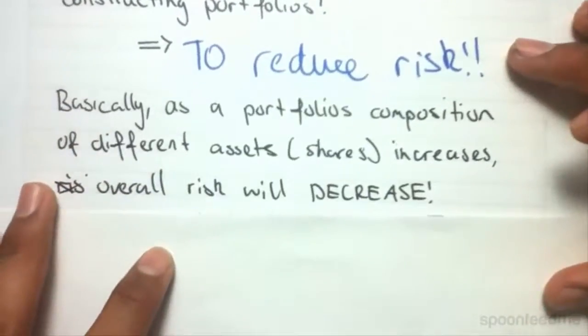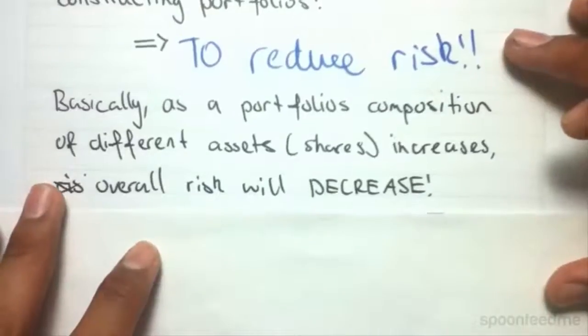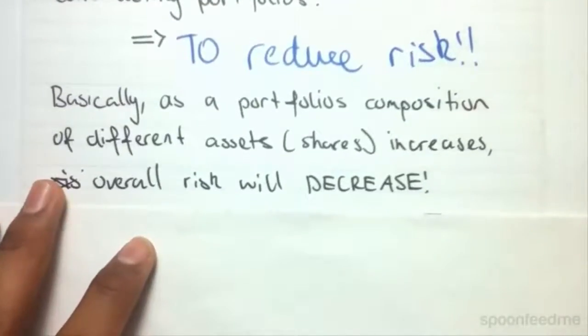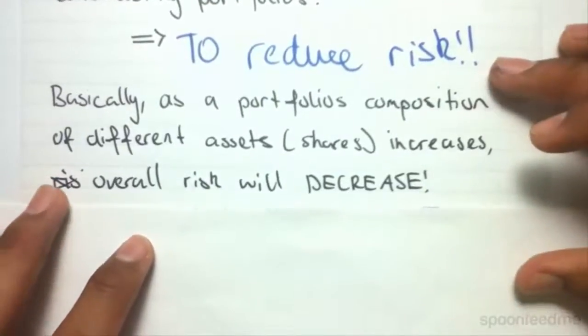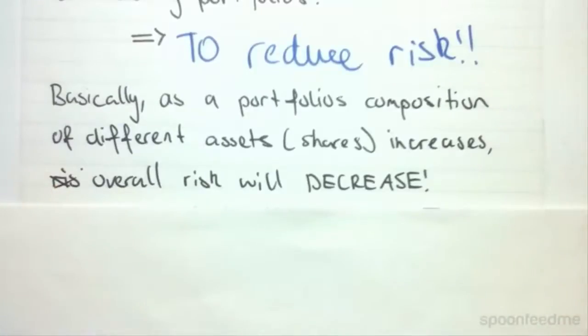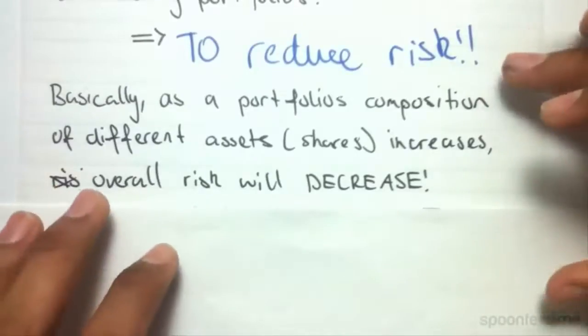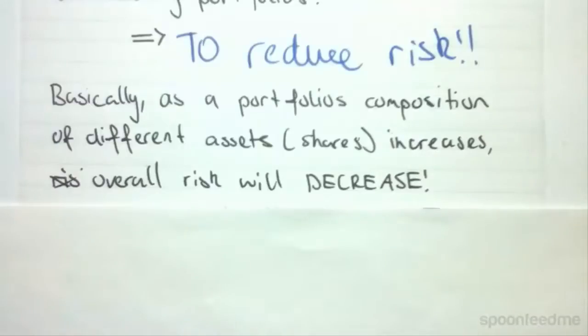So basically, as a portfolio's composition of different assets such as shares increases, overall risk will decrease. Overall risk will decrease as the composition of different assets increases.